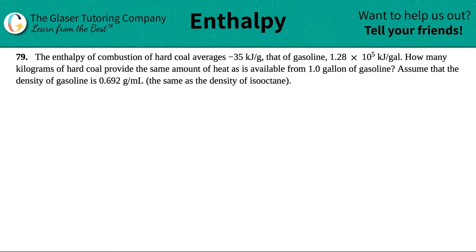Number 79. The enthalpy of combustion of hard coal averages negative 35 kilojoules per gram and that of gasoline 1.28 times 10 to the 5th kilojoules per gallon.